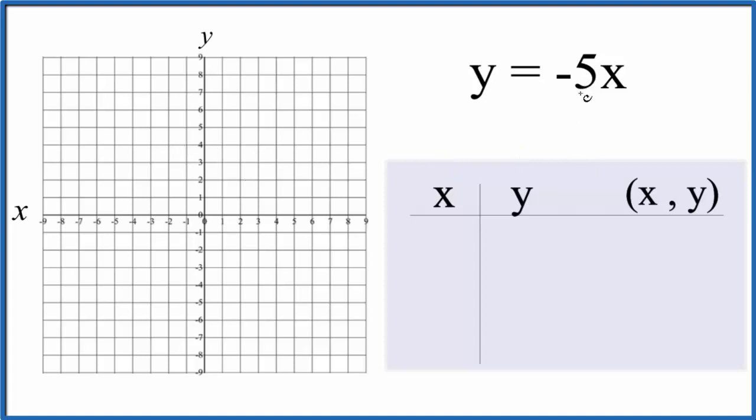So let's start out by putting some values in for x. We put 0 in for x, negative 5 times 0, that's just 0. Let's put 1, negative 5 times 1, that's negative 5, and how about negative 1? So negative 5 times negative 1, that would give us a positive 5.